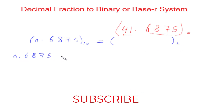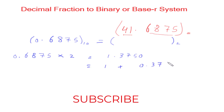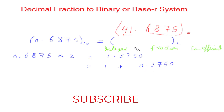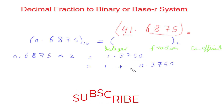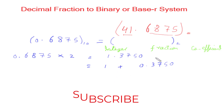We multiply 0.6875 by 2 since we are converting to base 2, and we get 1.3750. We can write this as: integer = 1, fraction = 0.3750. I'll set up an integer column, a fraction column, and a coefficient column. The coefficient for this step is 1.